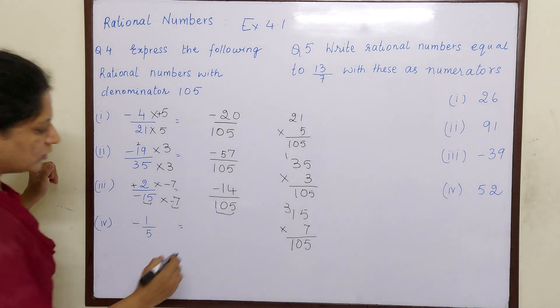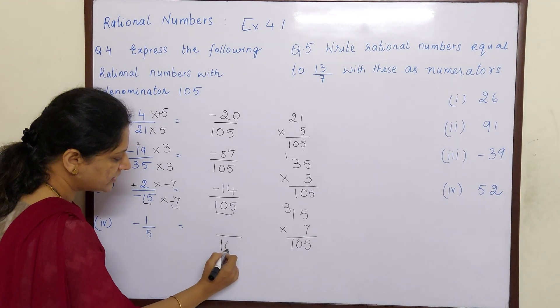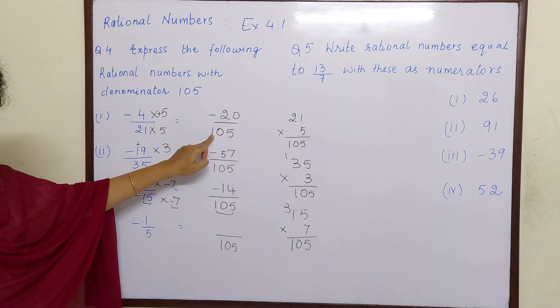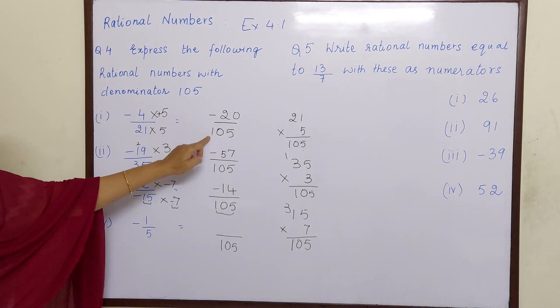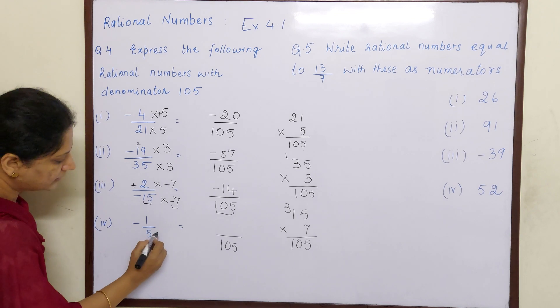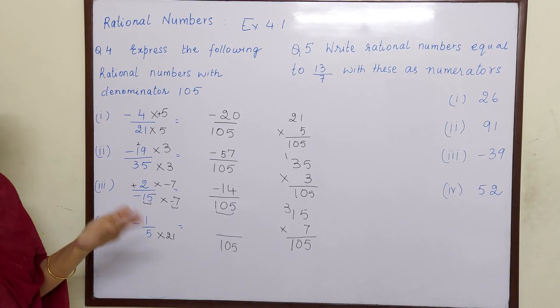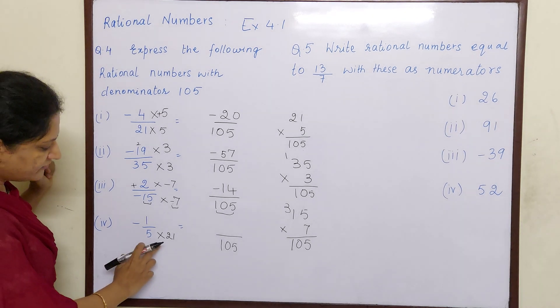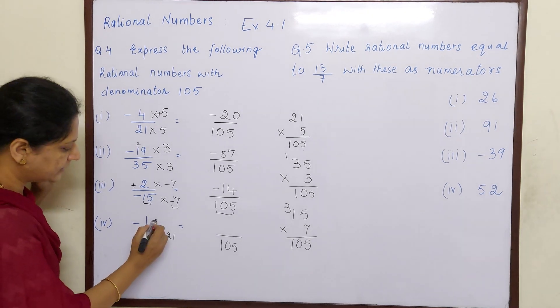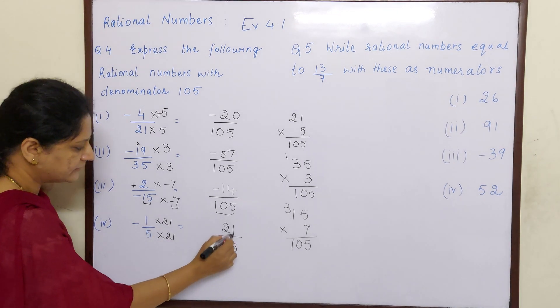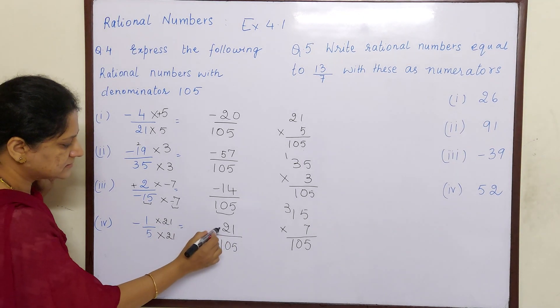Minus 1 by 5 is equal to, here also we have to make it 105. Now we know that 21 fives are 105. So if 21 fives are 105, 5 into 21 is also 105. Because 2 threes are 6, 3 twos are also 6. So now if I multiply 21 here, here also 21. 1 twenty-one is 21, minus into plus minus.